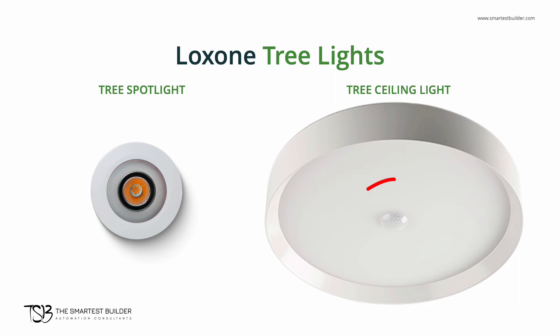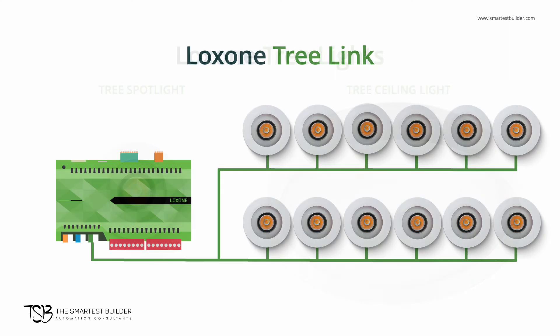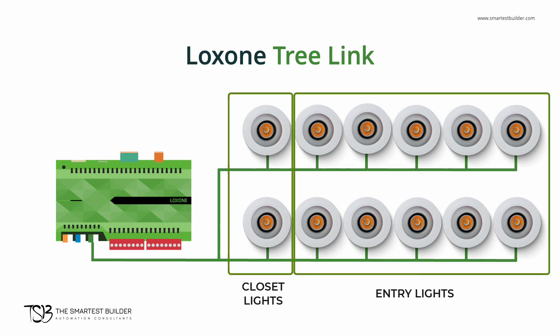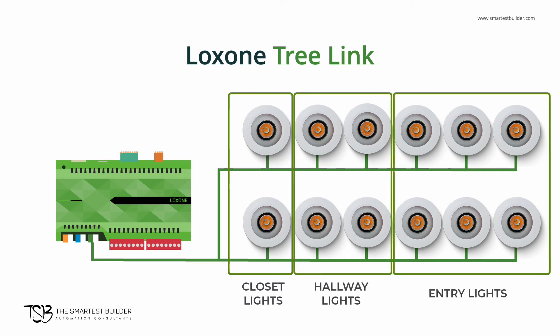Some differences between the spotlight and the ceiling light are that the ceiling light has a larger form factor, is surface-mounted, and has a programmable built-in motion and brightness sensor. Once connected, each individual tree device is controllable, so you can individually or group what lights turn on in the Luxon config at any time. If you want to change how your lights behave after a couple of years, you don't need to run new wires or undergo major renovations — just change the program yourself.